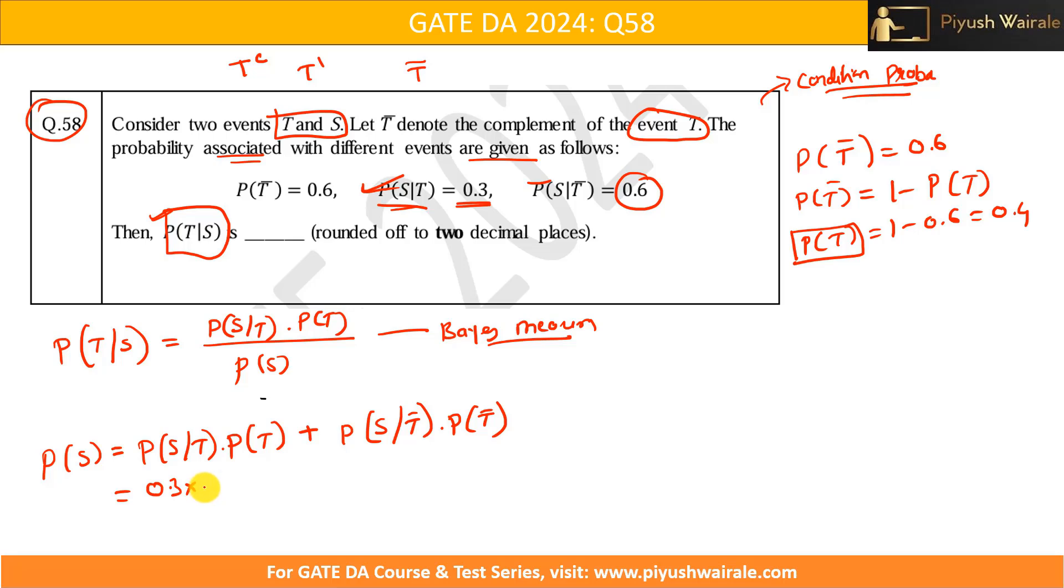Then just put the values. Here we have 0.3 into 0.4 plus here we have 0.6 into 0.6. Again, same thing, right? Here and here. So, everything is given to us. Just do the calculation. That will be 0.12 and this will be 0.36, that will be 0.48, right?